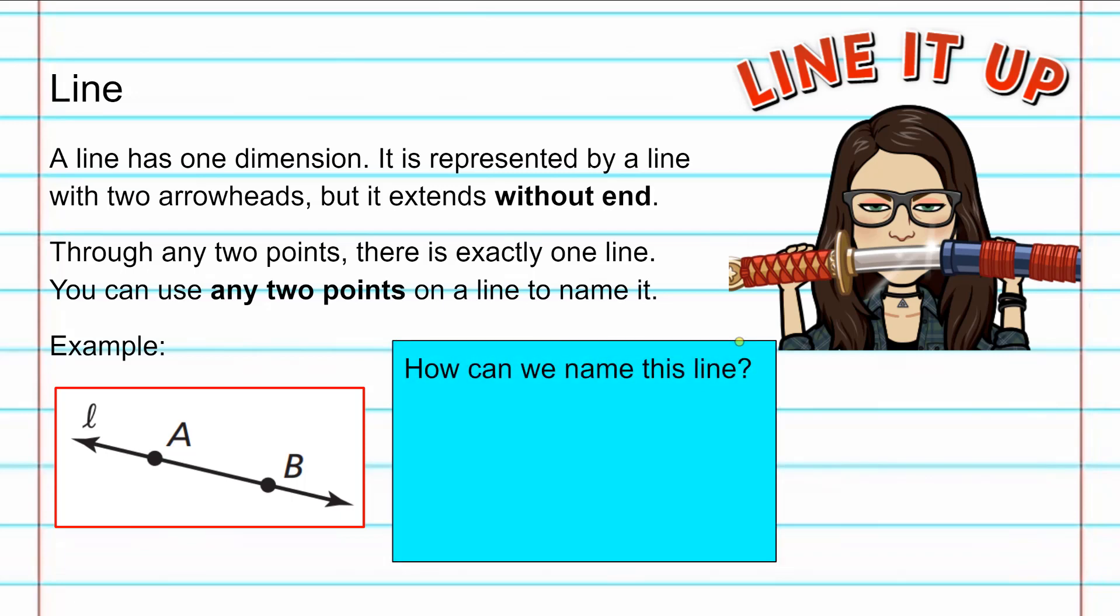So how can we name this line? We can call it Line L. Or we can use the points that are on the line to label it. So we can call it Line AB. The notation for that is AB with a little line right on top of those letters.